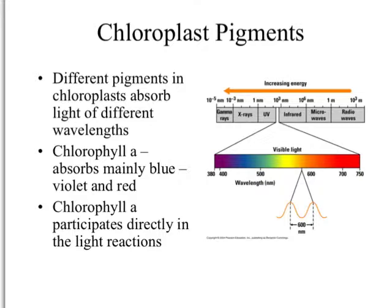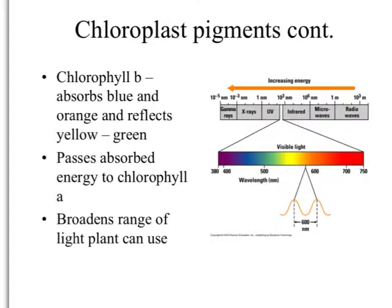Within the chloroplast there are three main pigments that absorb different wavelengths of light. Chlorophyll A absorbs mainly blue-violet and red wavelengths, and it directly participates in the light reactions. Chlorophyll B absorbs blue and orange wavelengths and reflects yellow-green. Chlorophyll A works closely with chlorophyll B — whatever energy is absorbed by chlorophyll B gets transferred to chlorophyll A. The main purpose of chlorophyll B is to broaden the range of light that the plant can use.